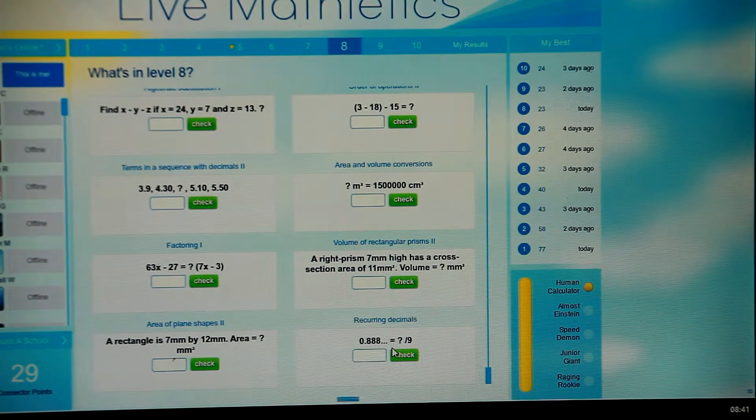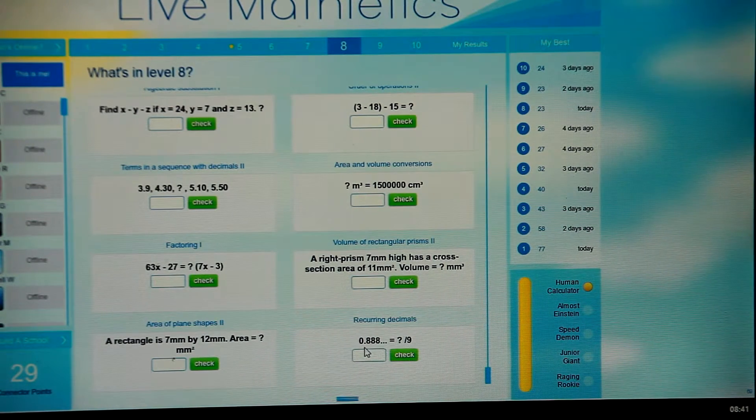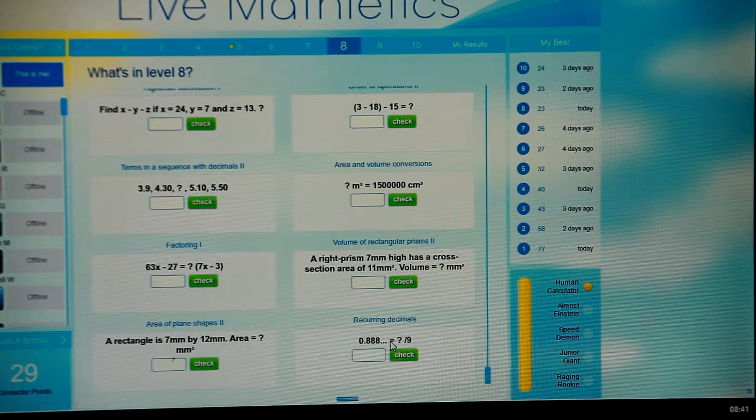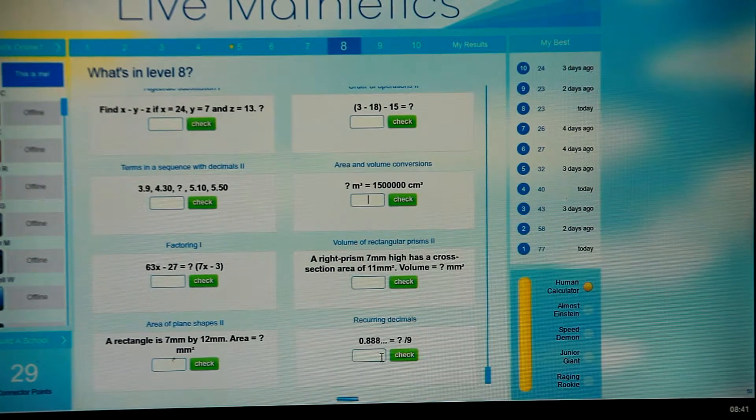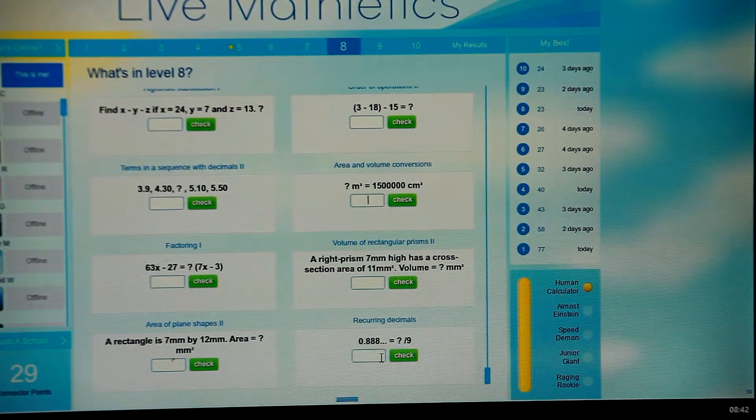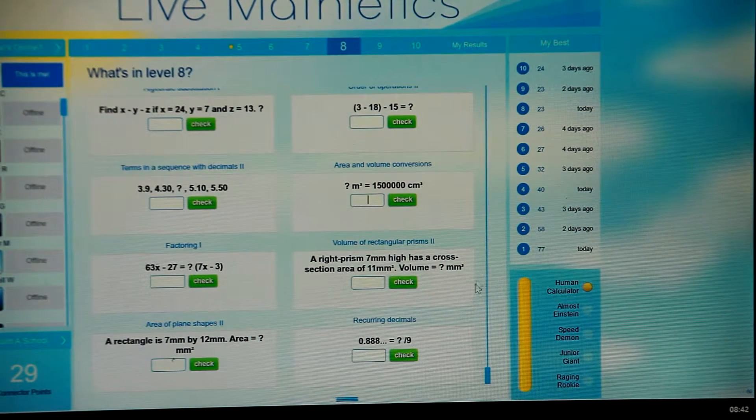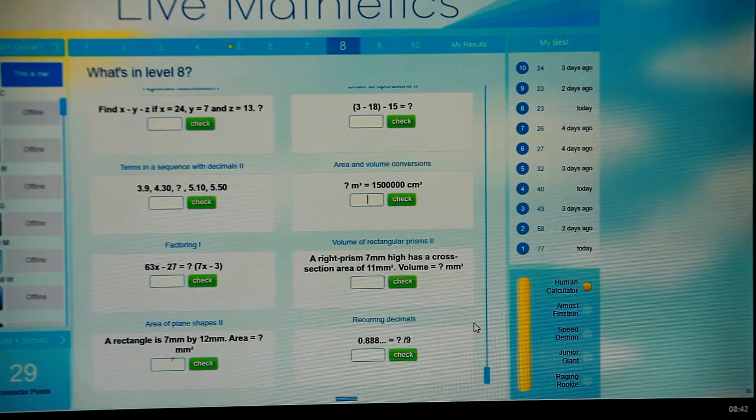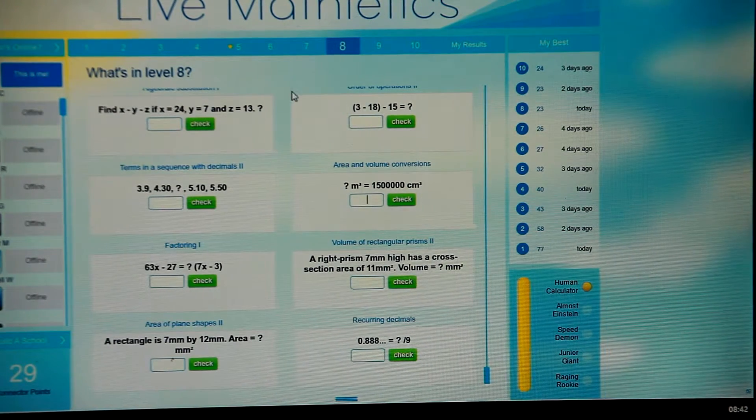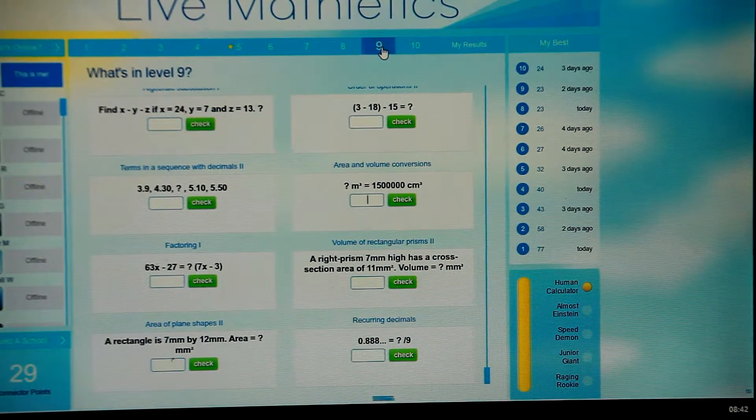With repeating decimals, they like to ask you about things like 0.8888, and that of course is eight ninths. You can check these things on a calculator. The other ones you need to know would be 0.3333, which is a third, and 0.6666 is two thirds. Other more complicated decimals you probably won't be asked in this sort of thing. So let's move on now to Level 9.